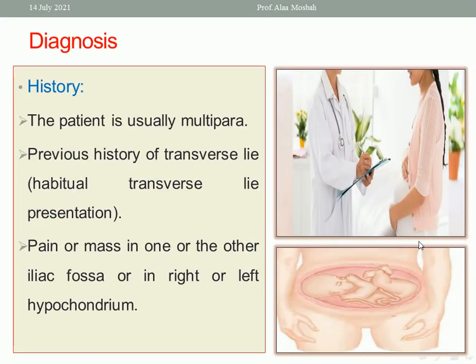How to diagnose? From history, the patient is usually multiparous, with a previous history of transverse lie, pain or mass in one or the other iliac fossa, or in the right or left hypochondrium. The lump can be felt in the iliac fossa and in the right or left hypochondrium.